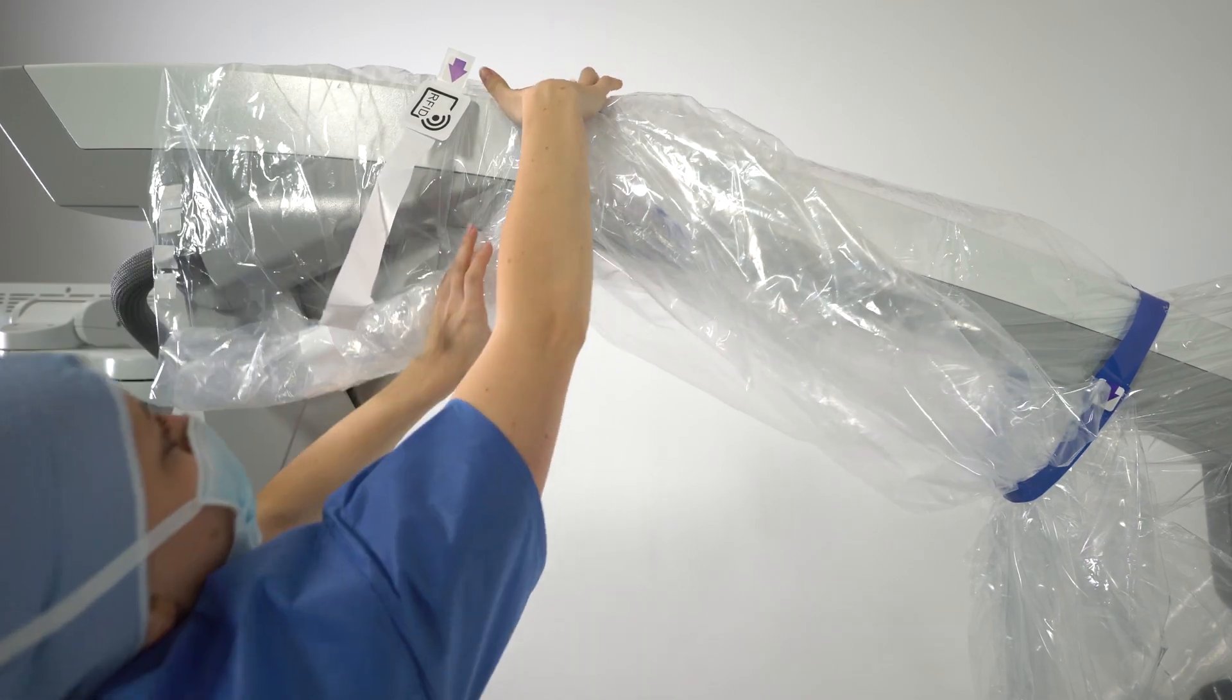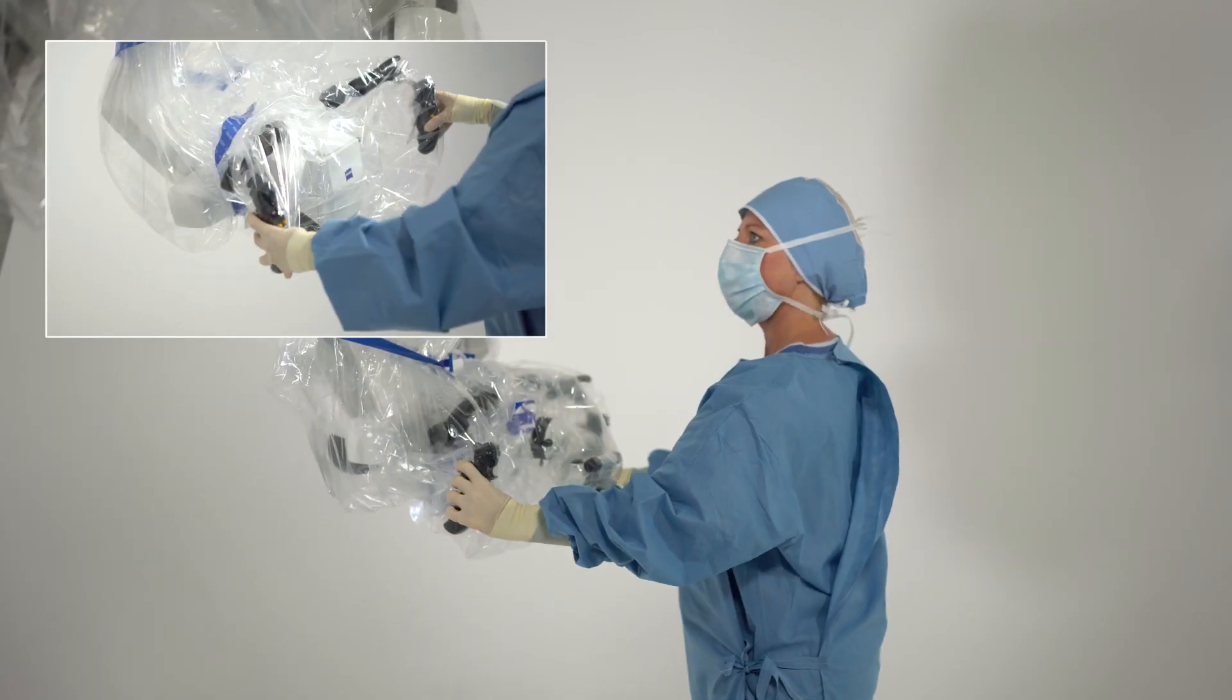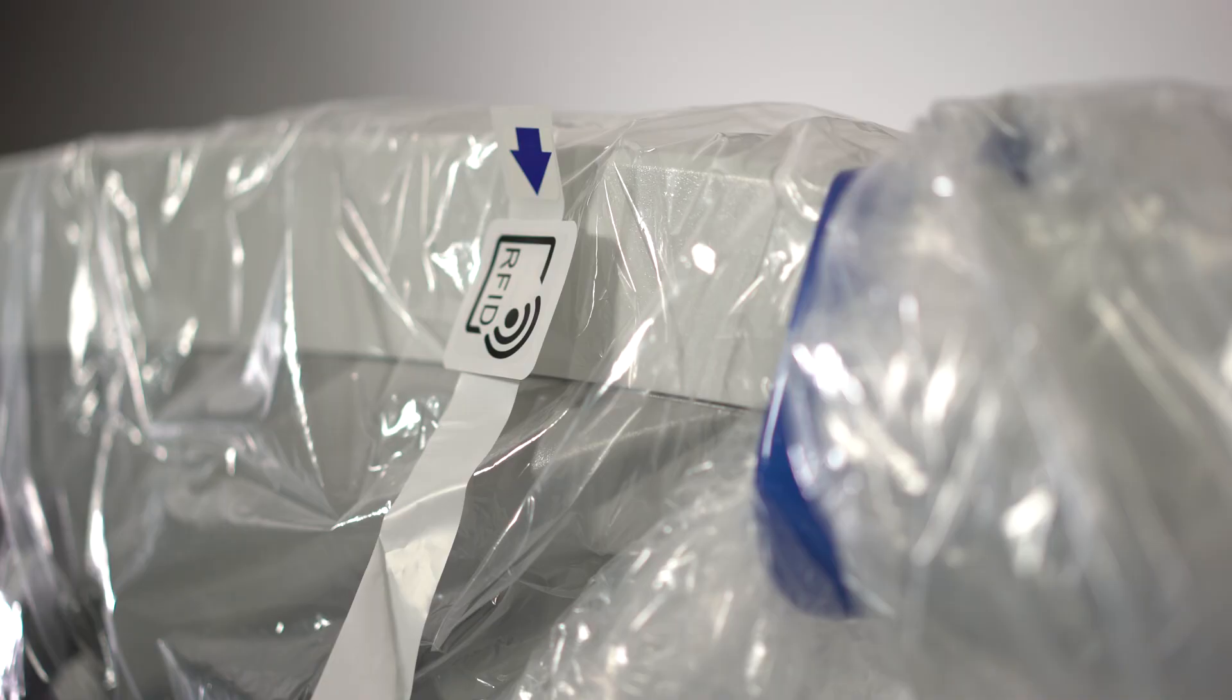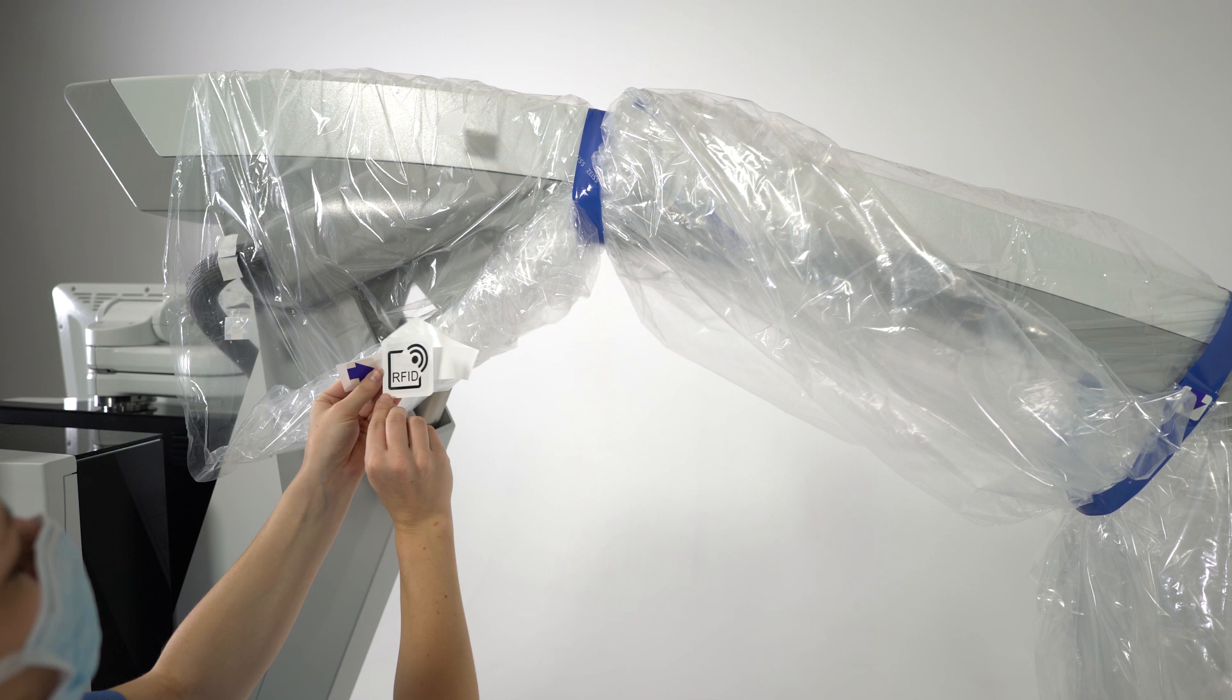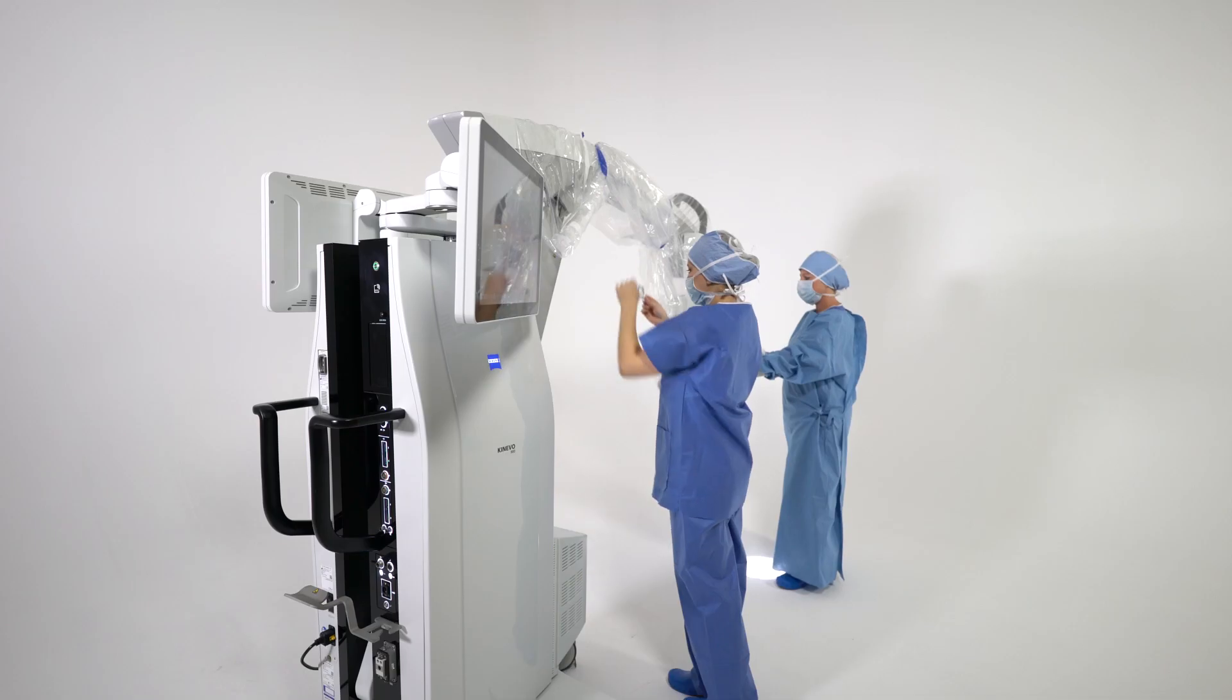After draping, check free movement of Zeiss Kenevo 900 in all three axes. Take the RFID sticker off the white band and place the RFID sticker at the back of the device, indicated with an RFID sign.